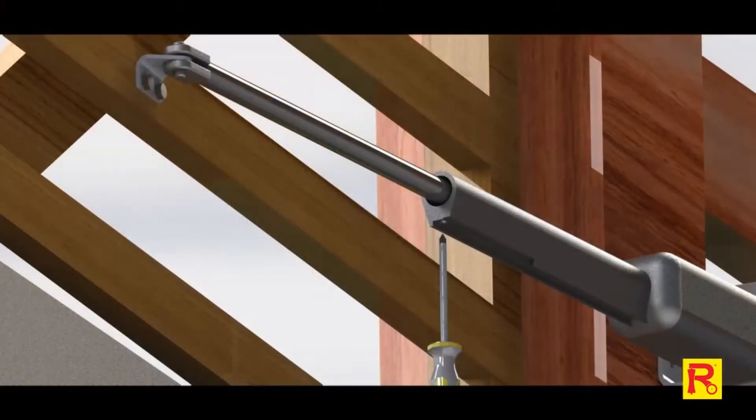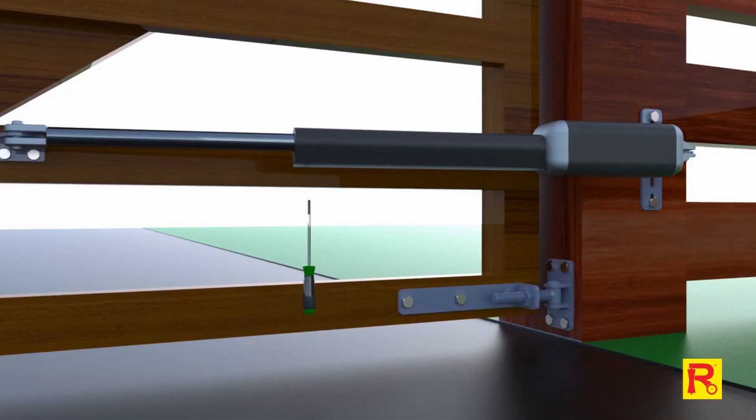Both gate motor arms are fitted with an adjustable limit switch which sets the final closing position of your gates. Using a Phillips head screwdriver, loosen the screw on the motor without removing it. Slide the limit switch towards the motor to set the final closing position and then re-tighten the screw.